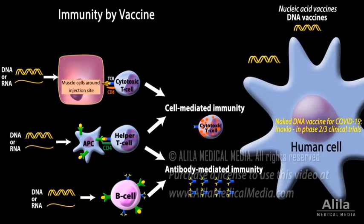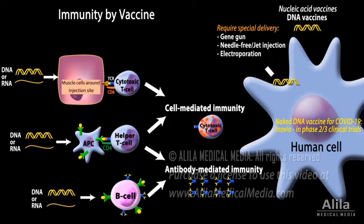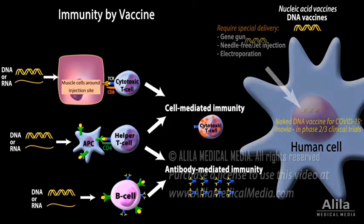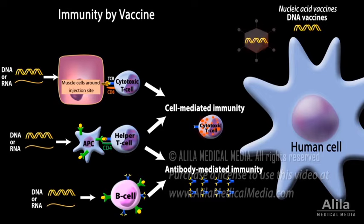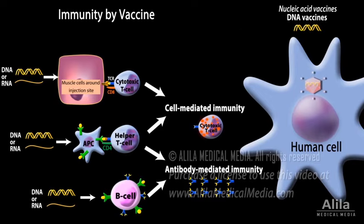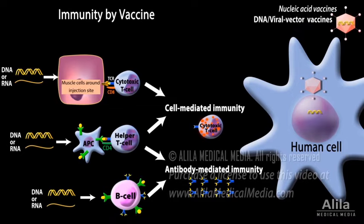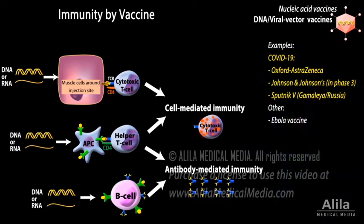Naked DNA vaccines require a special delivery method to reach the cell's nucleus. Alternatively, a harmless, unrelated virus may be used as a vehicle to deliver the DNA. In this case, the vaccine is also known as a viral vector vaccine.